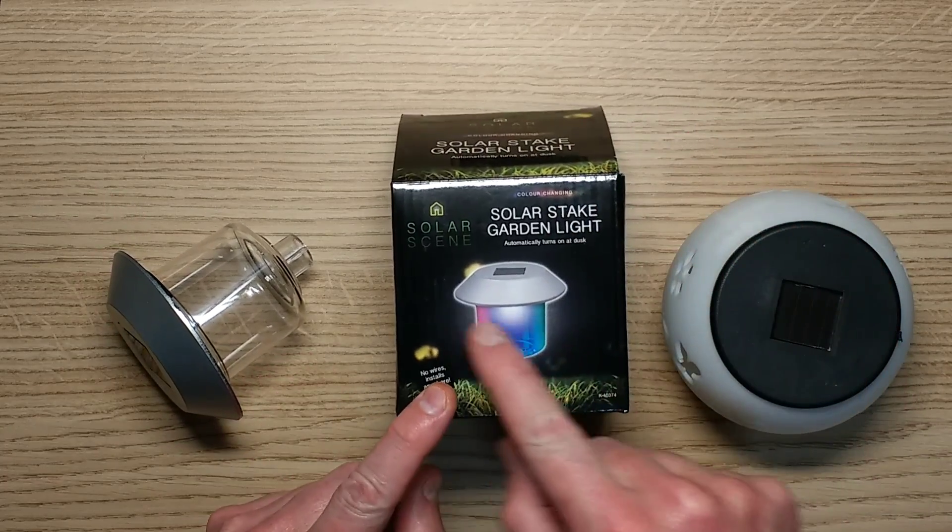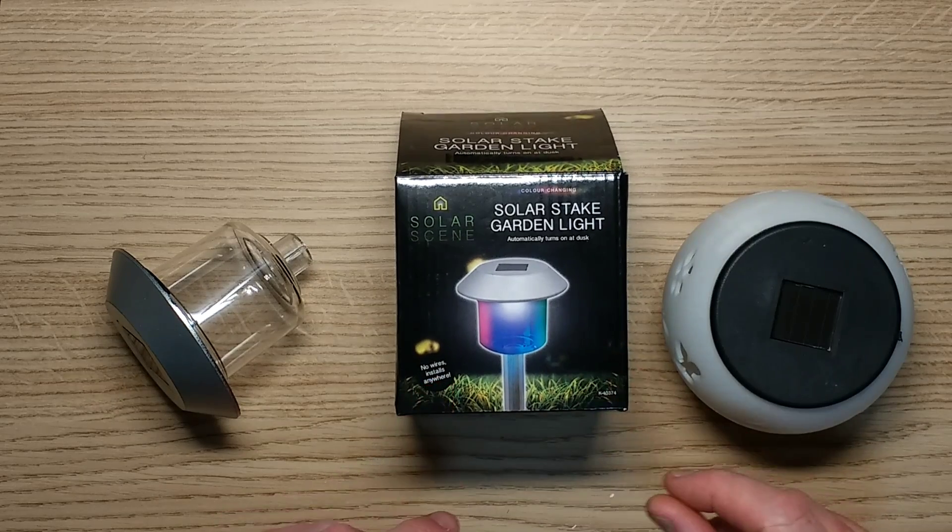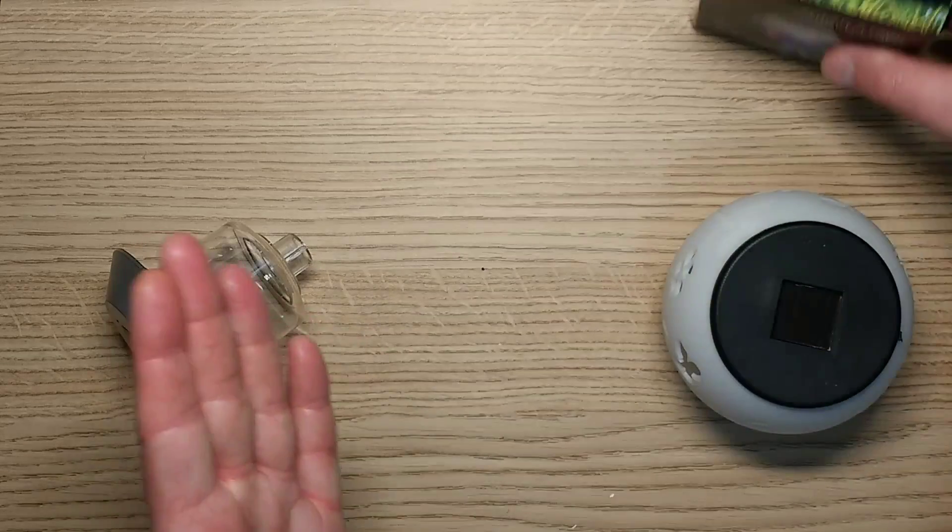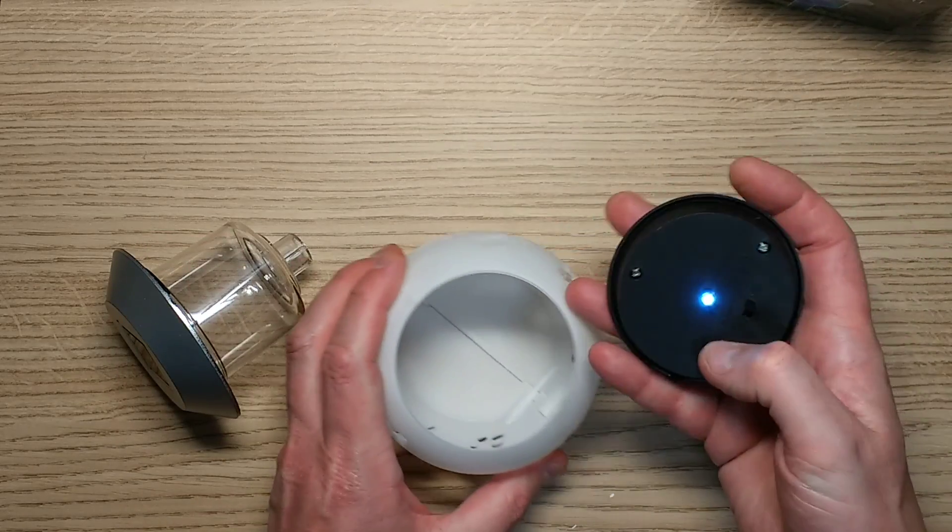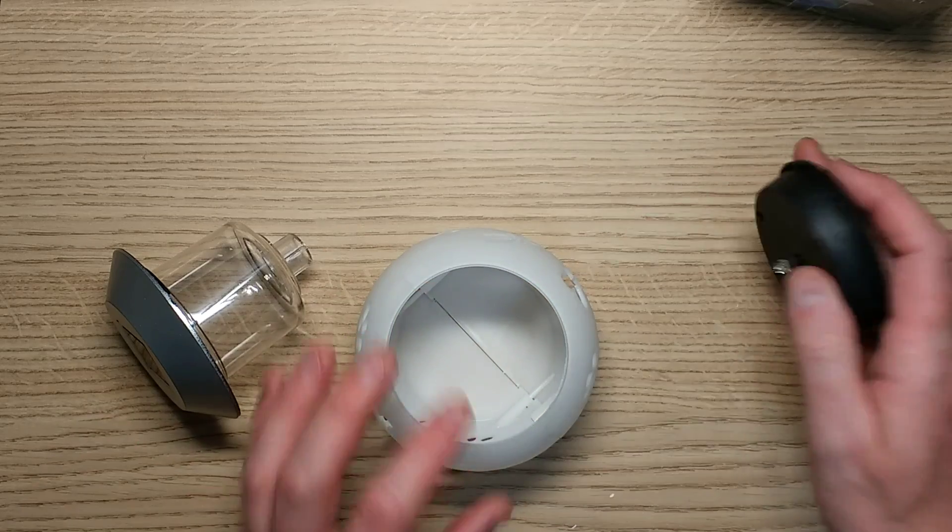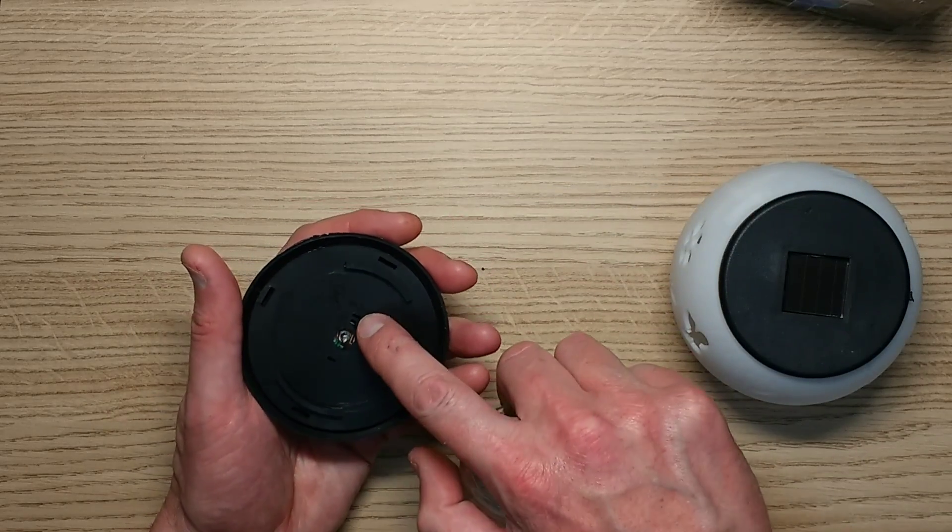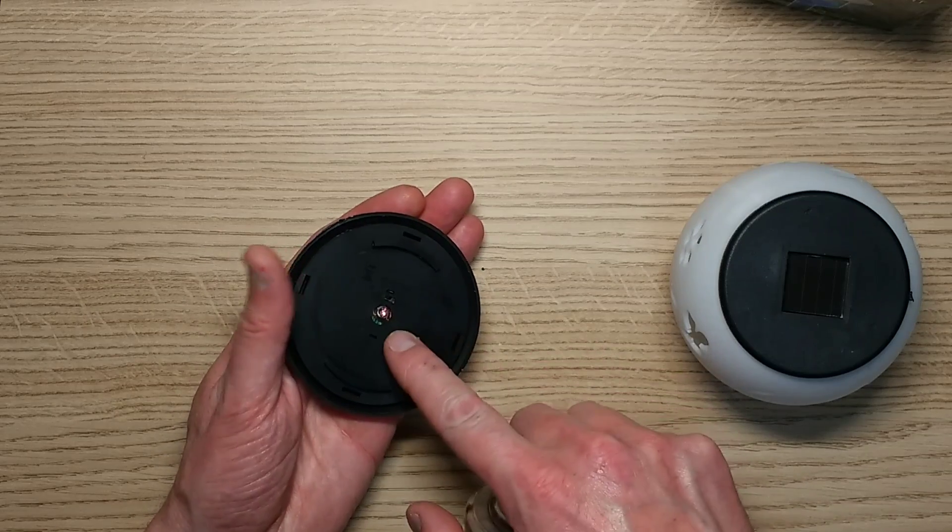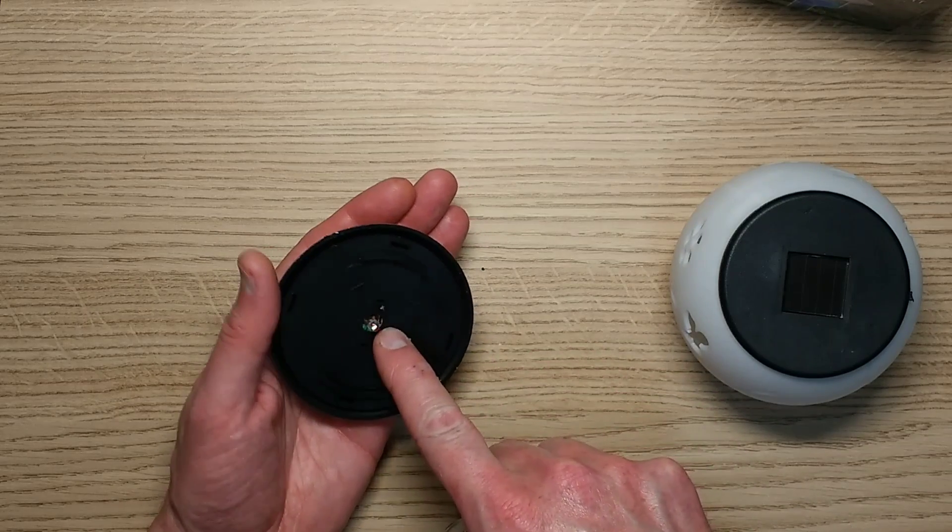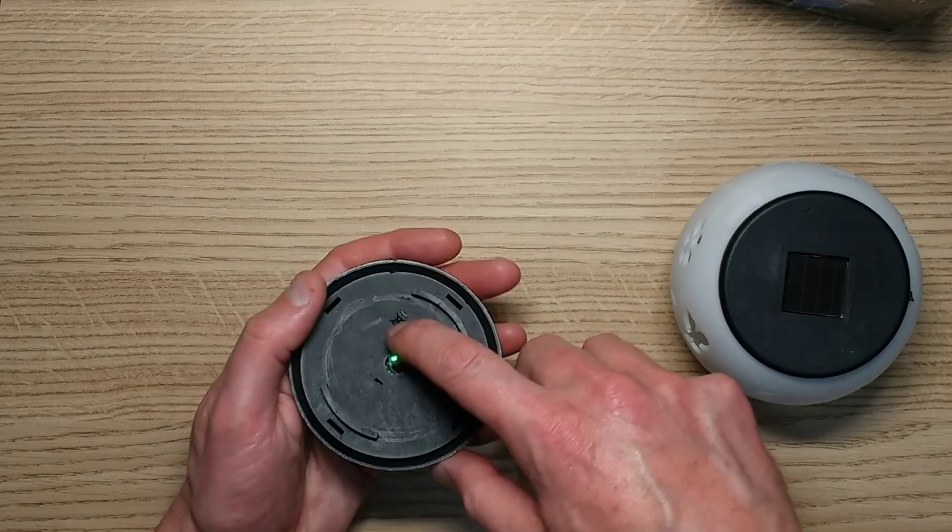The subject of this video is color changing LED lights, the solar lights. You get mostly single color ones, just the standard white LED, but you also get these color changing ones that have the standard color changing LED and they just cycle through the colors. This one is pretty flat. You're probably not going to see it cycling through the colors, but it is.